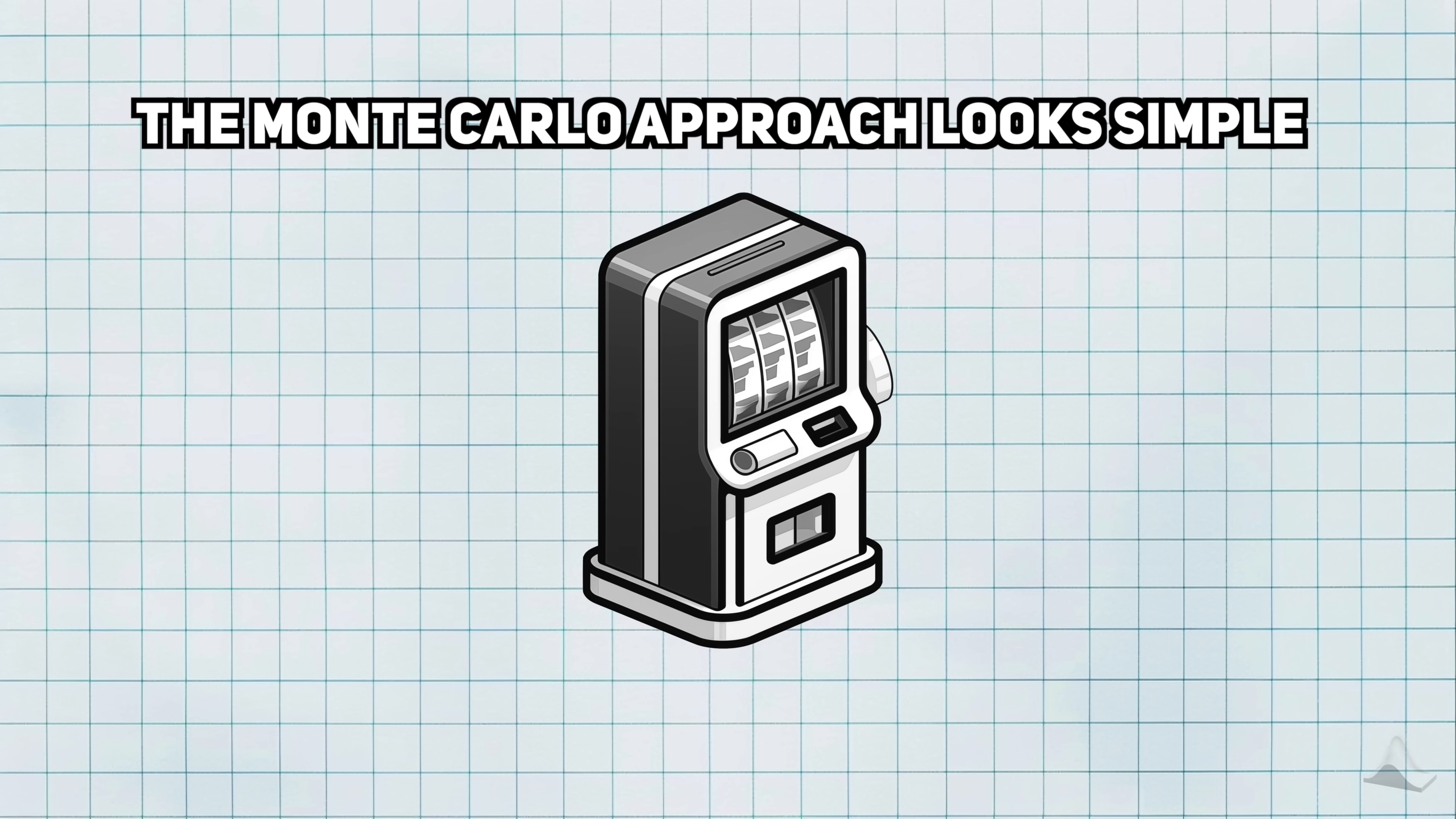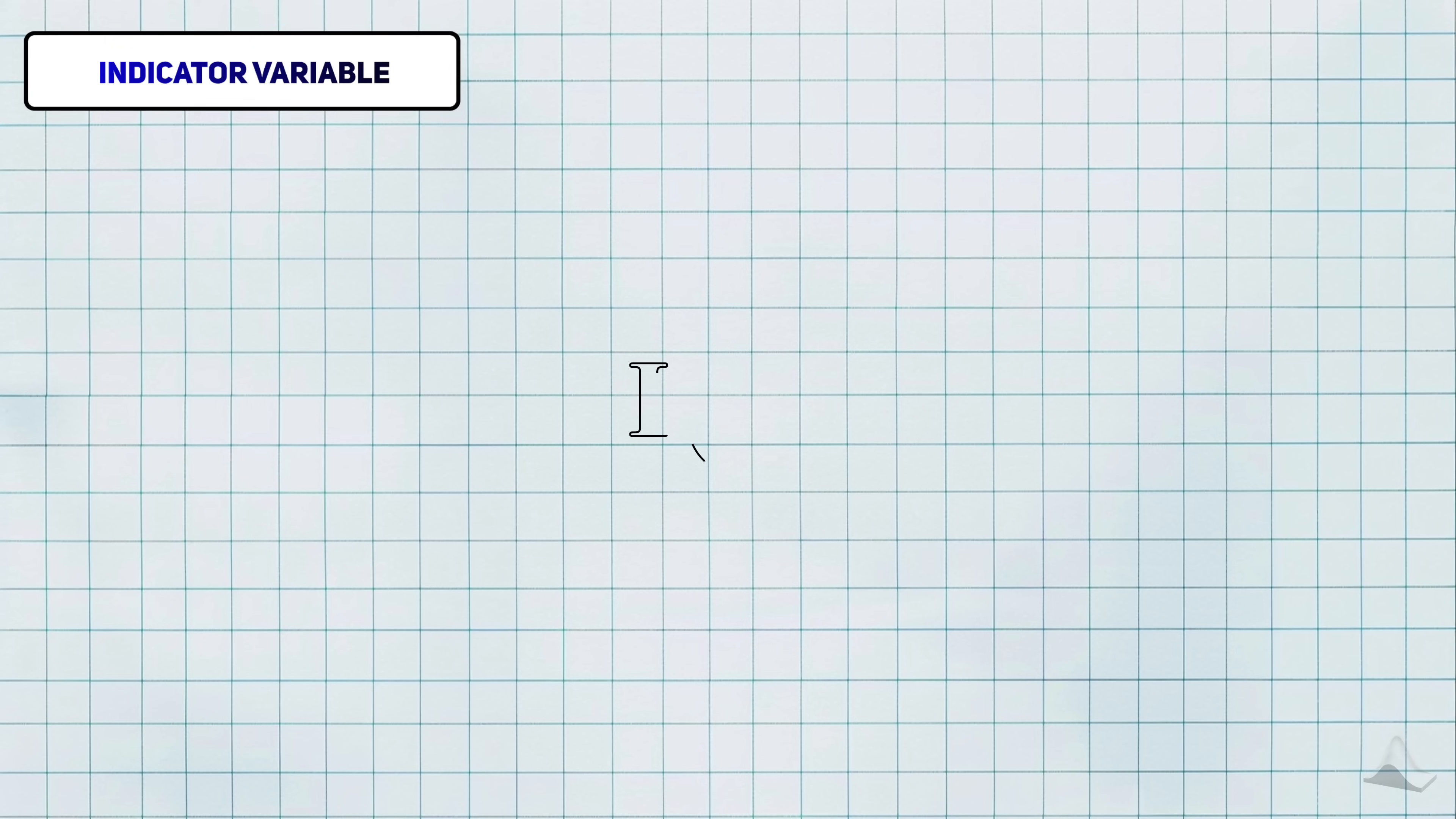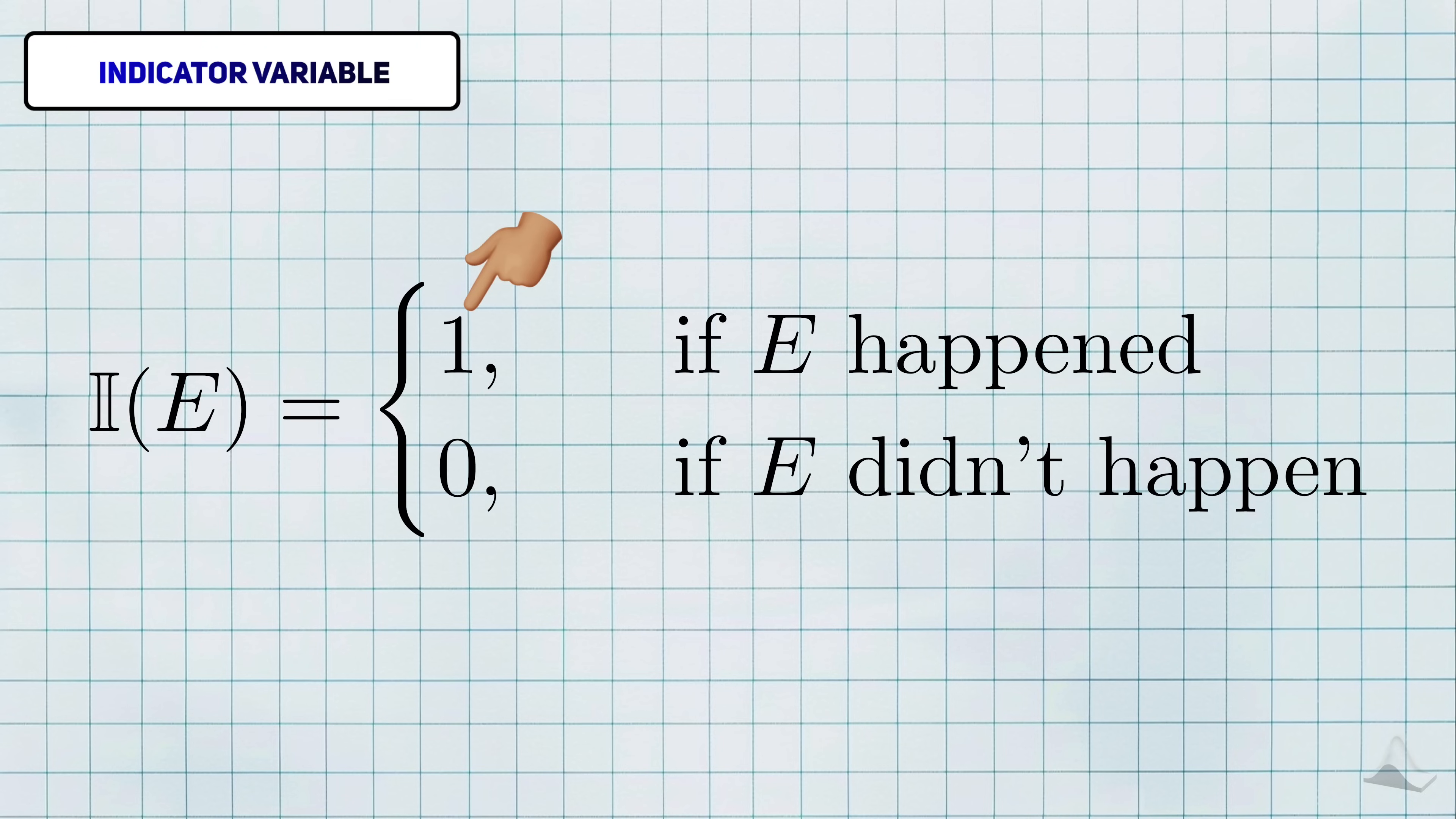The Monte Carlo framework looks very simple, and that's because it is. But how can it be so powerful if it's so simple? The key to my simulation study is the results that I collect for each simulation. There's a special random variable called an indicator variable, which I'll just call indicator for short. An indicator is a binary random variable, and it takes the value 1 whenever some pre-specified event e happens, and 0 if it doesn't. It gets its name because it indicates that an event happened.